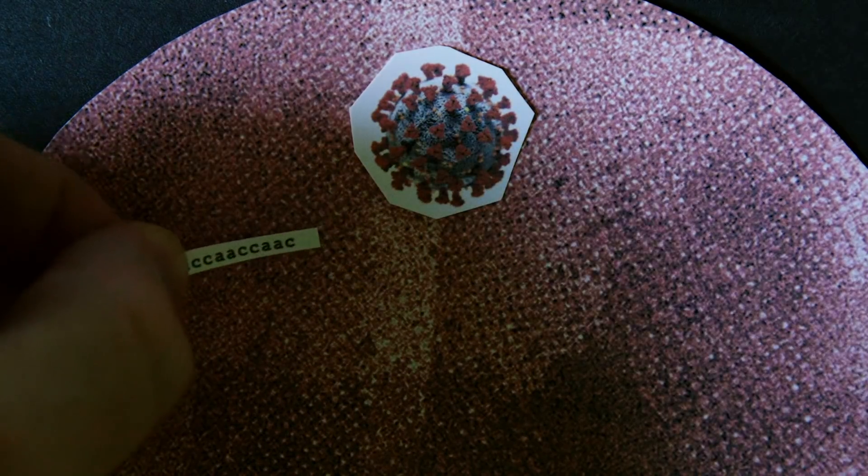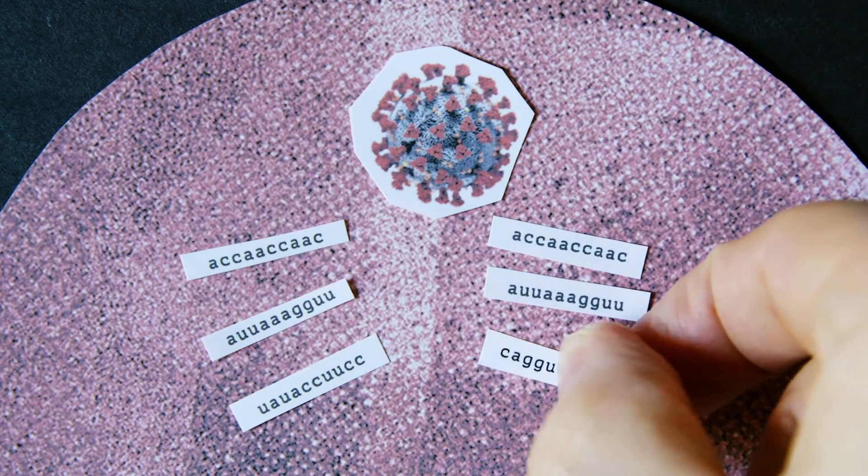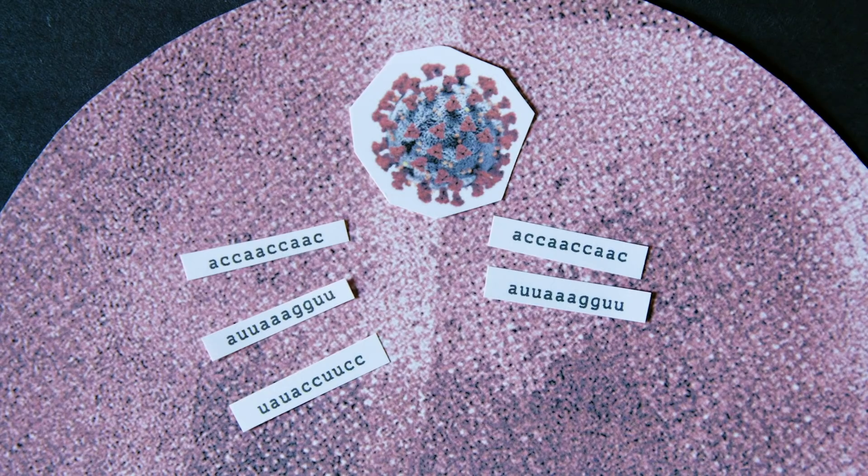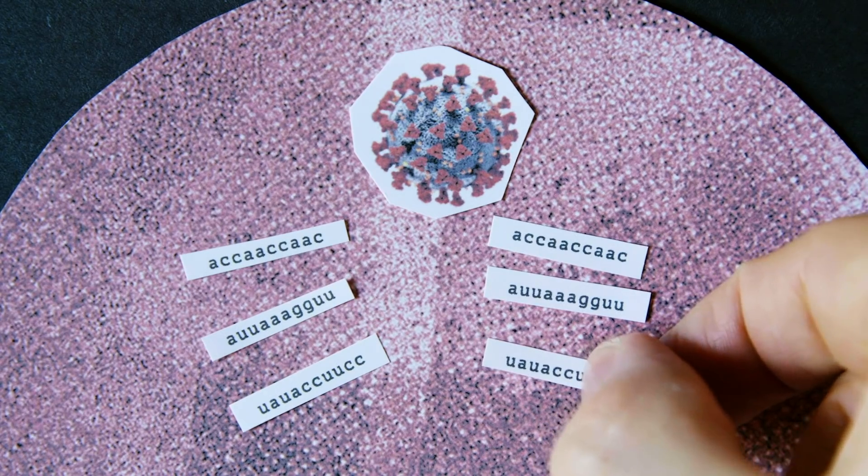But coronaviruses, like this one, actually do have proofreaders built in. They double check that they're not making mistakes when they copy themselves. So they're less likely to slip in the wrong nucleotide.